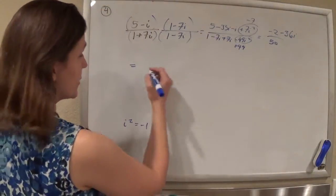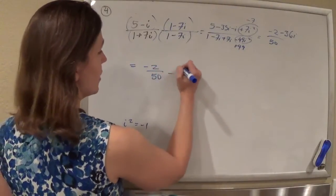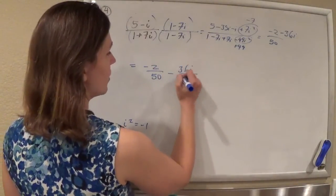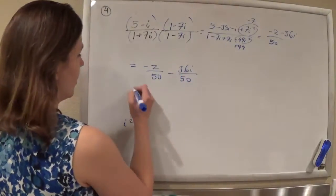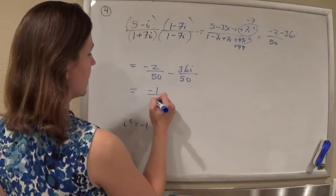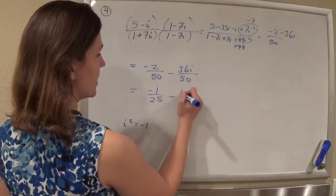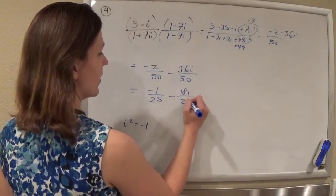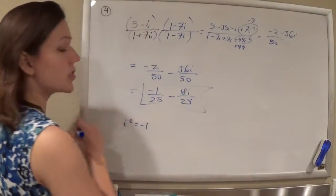So if we just split this up into negative 2 over 50 minus 36i over 50, then we'll reduce each fraction: negative 1 over 25, minus 18i over 25. And that is your answer. Ta-da!